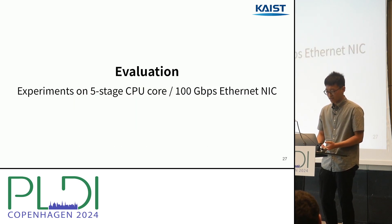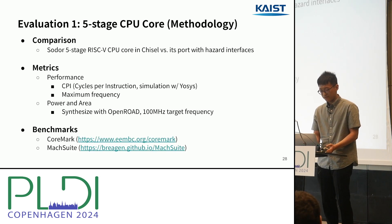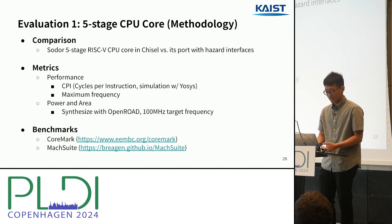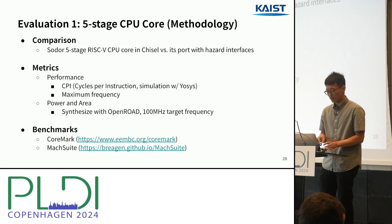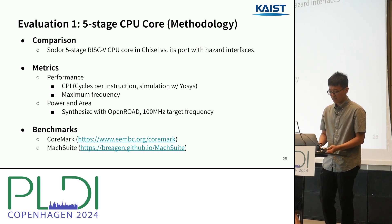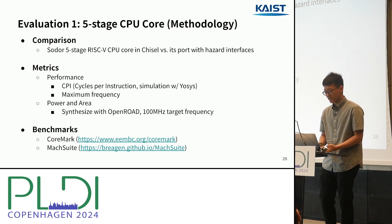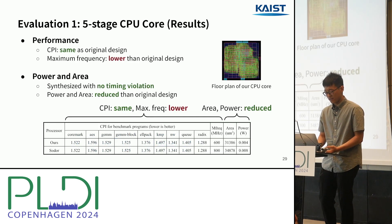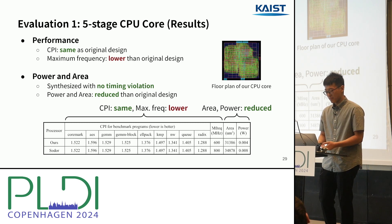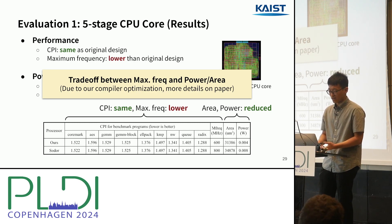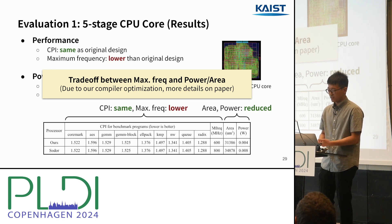We evaluated case studies on a five-stage CPU core and a 100 Gbps Ethernet link. For the five-stage CPU core, we compared the original Sodor CPU core in Chisel and our port with hazard interfaces in performance, power, and area. We simulated the CPU core with CoreMark and MiBench benchmarks. We observed that the CPI is exactly the same as the original design, and ours consumes less area and power than the original design. However, maximum frequency is lower than the original design. We believe this trade-off is due to our compiler optimization, and more details are in our paper.